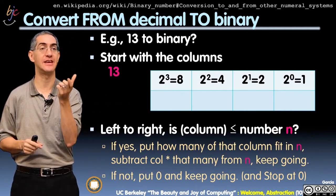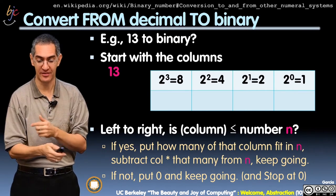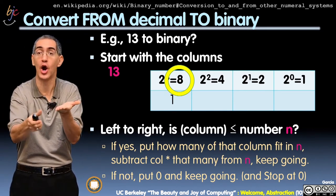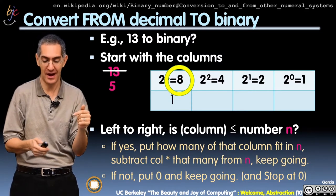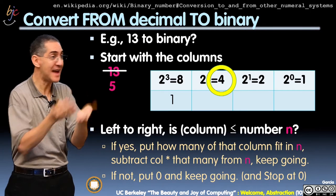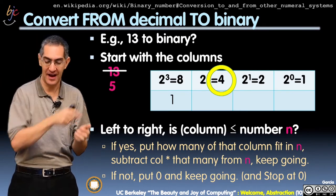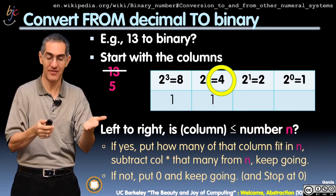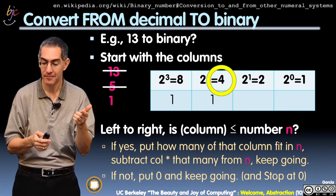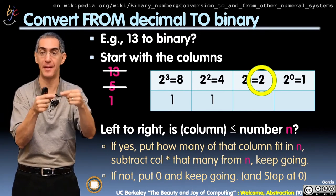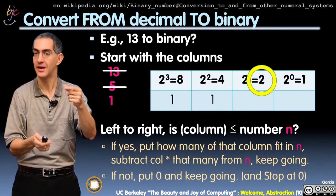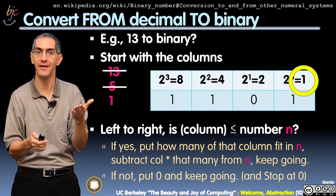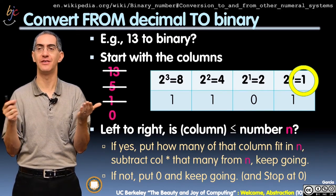So let's try it. How many 8s fit in 13? 1. So you put a 1 in the 8's column. After putting the 8 in, what's the space left over? 5. Now we repeat — this is the algorithm. Compare 4 to 5. How many 4s fit in 5? 1. Put a 1 there. You put one 4 in, leaving 1 left. How many 2s fit in the 1 space? 0. Put a 0 there. How many 1s fit in that space? 1. Put a 1 there. It's 0. And you're done. You stop when you're at 0.